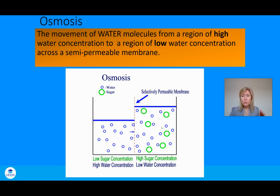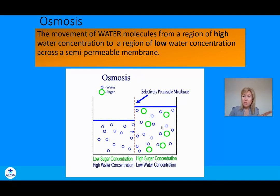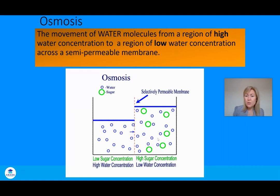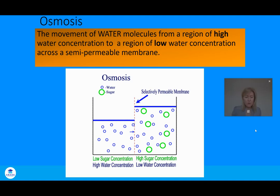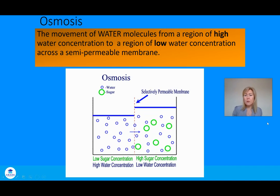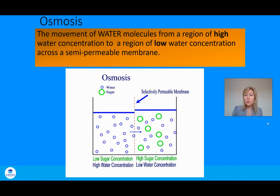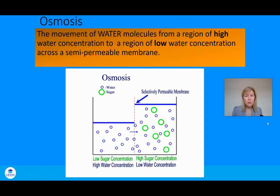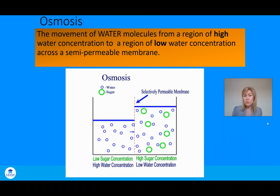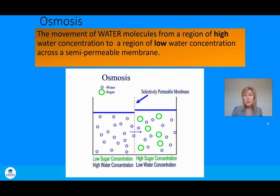Sugar never moves — it's too big. Water keeps moving from where there's lots of it — a high water concentration — to where there's a low water concentration, in order to even up the balance. You can see in the animation that as the water moves across, the green circles representing sugar never move at all. Water moves by osmosis.